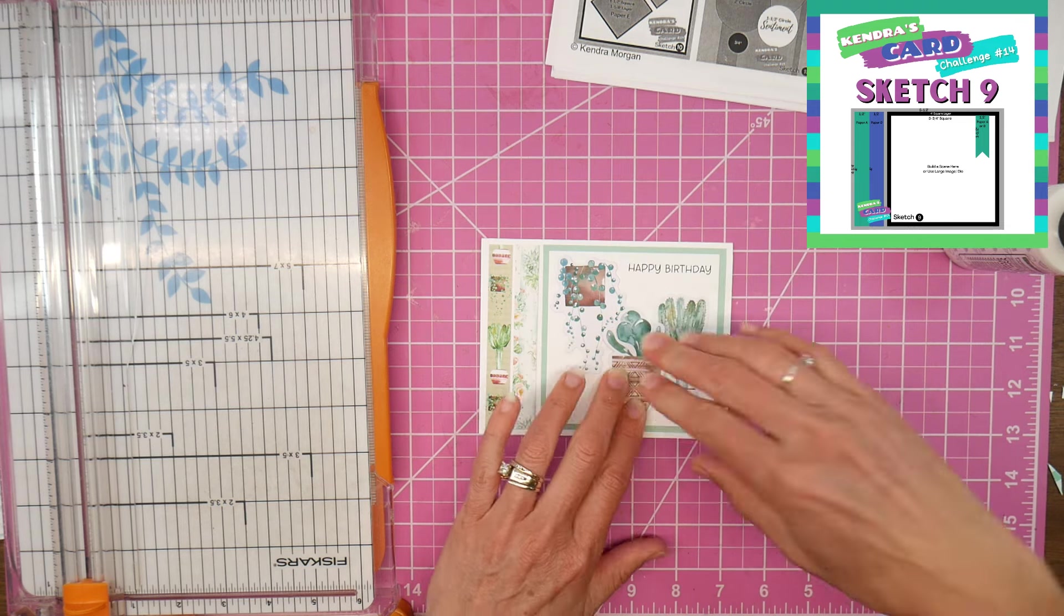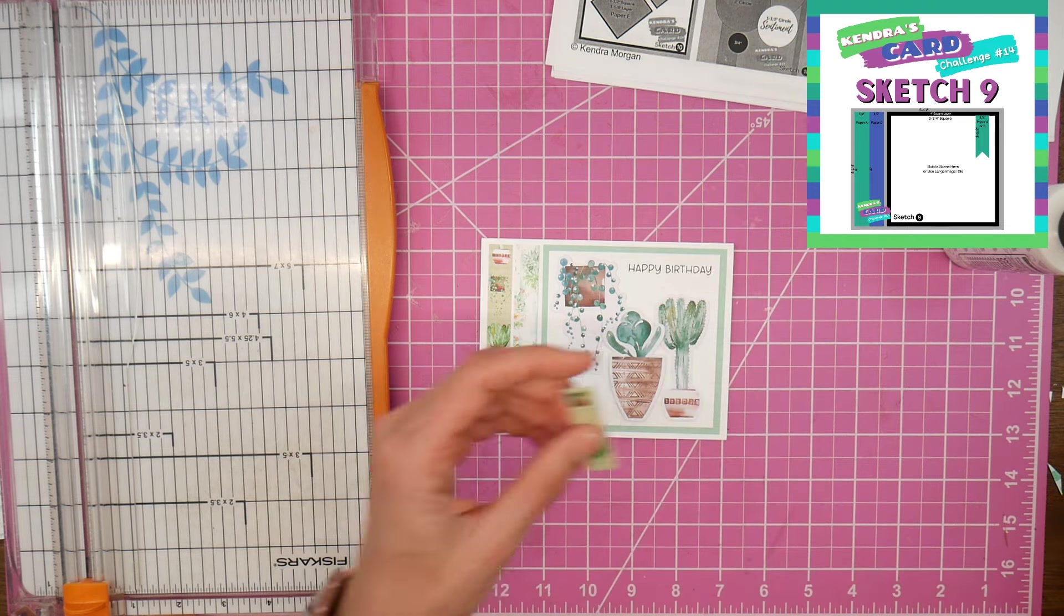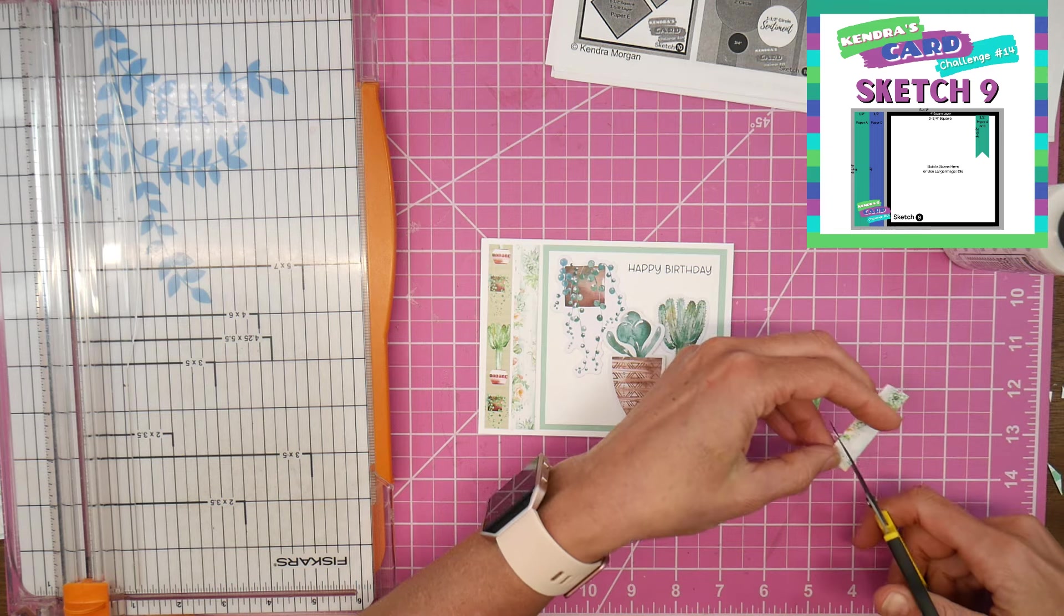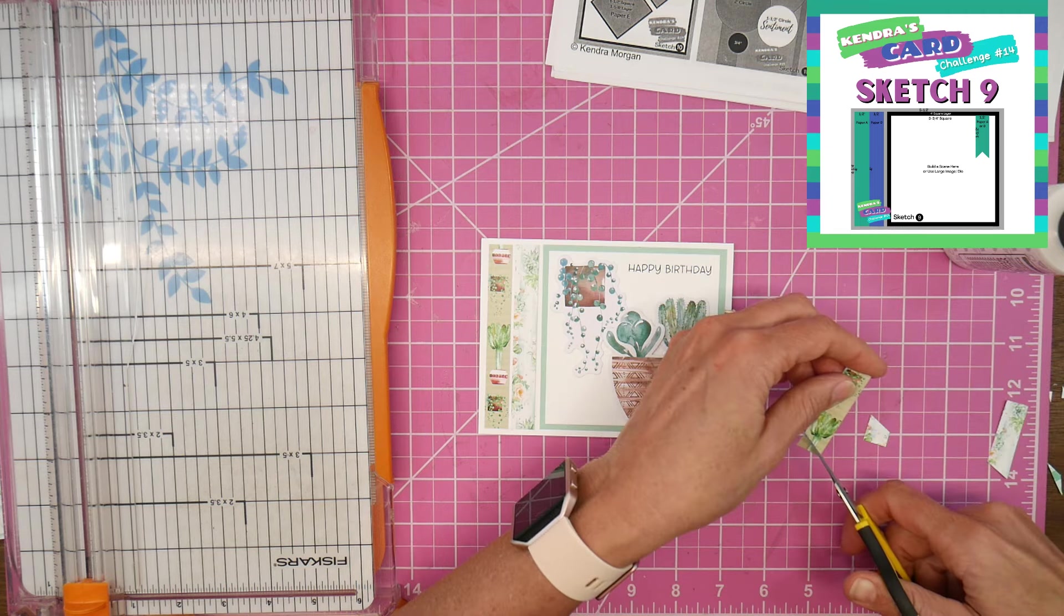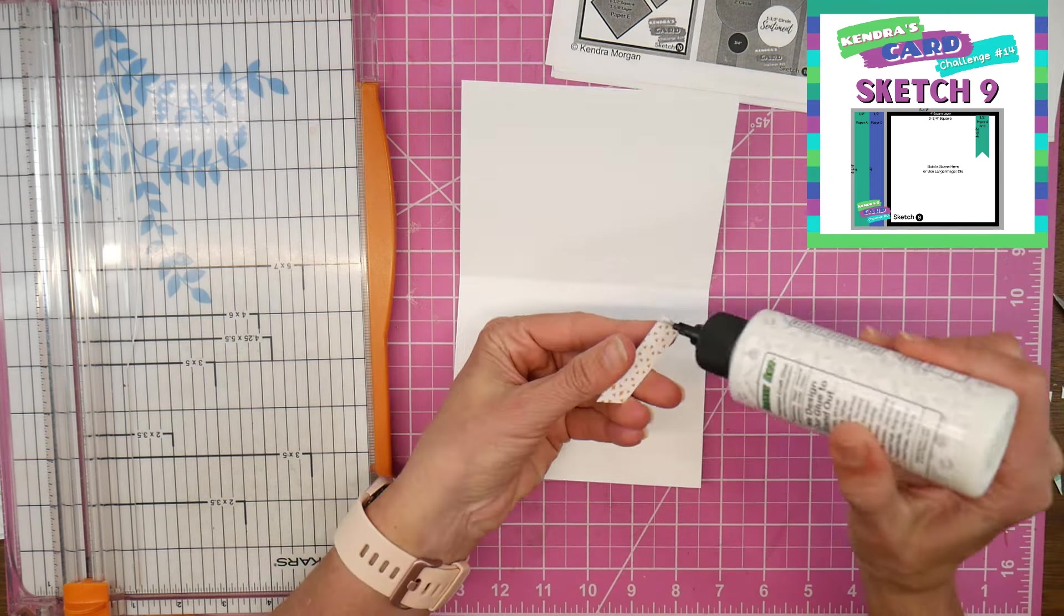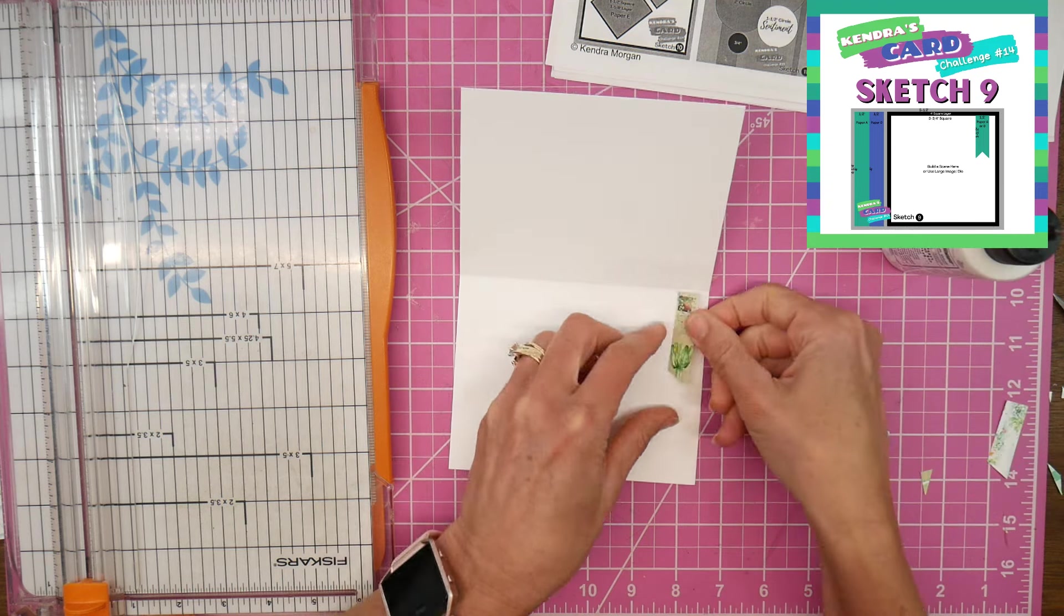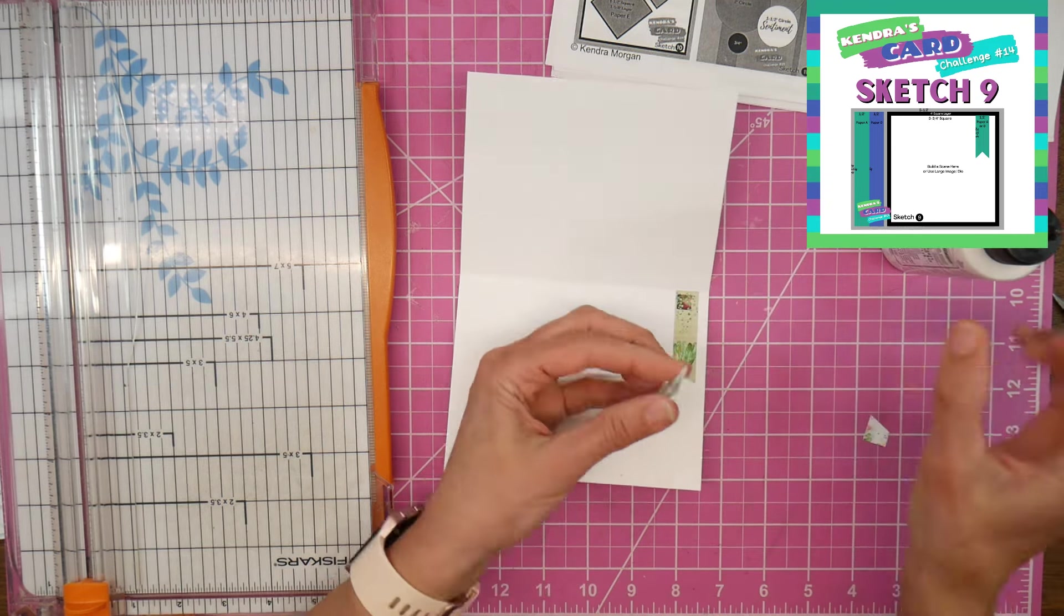Again adding, I had two strips left from the strips that I did on the left side of the card, so I will add those to the inside.